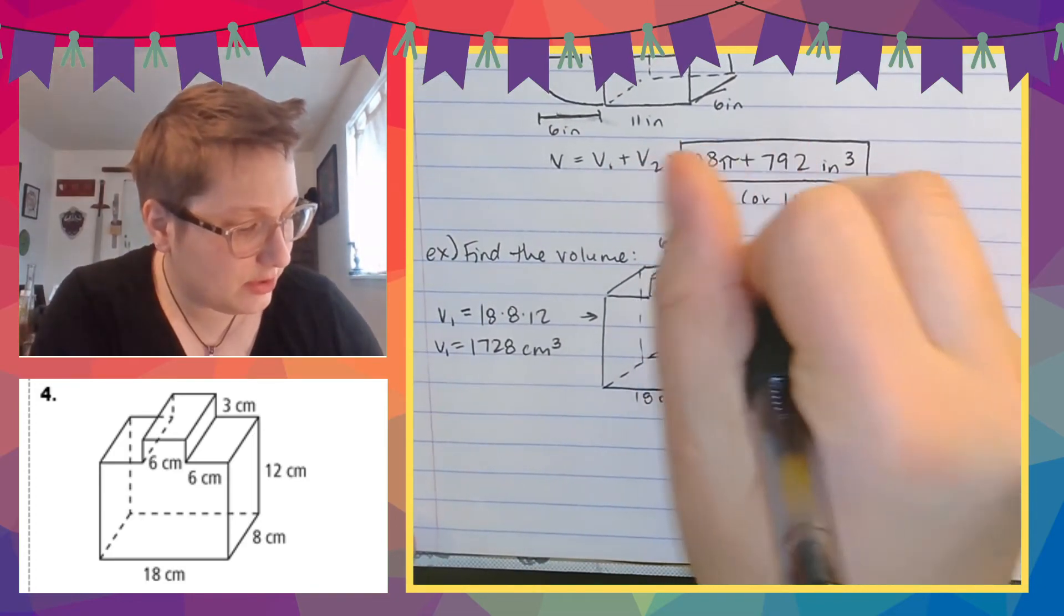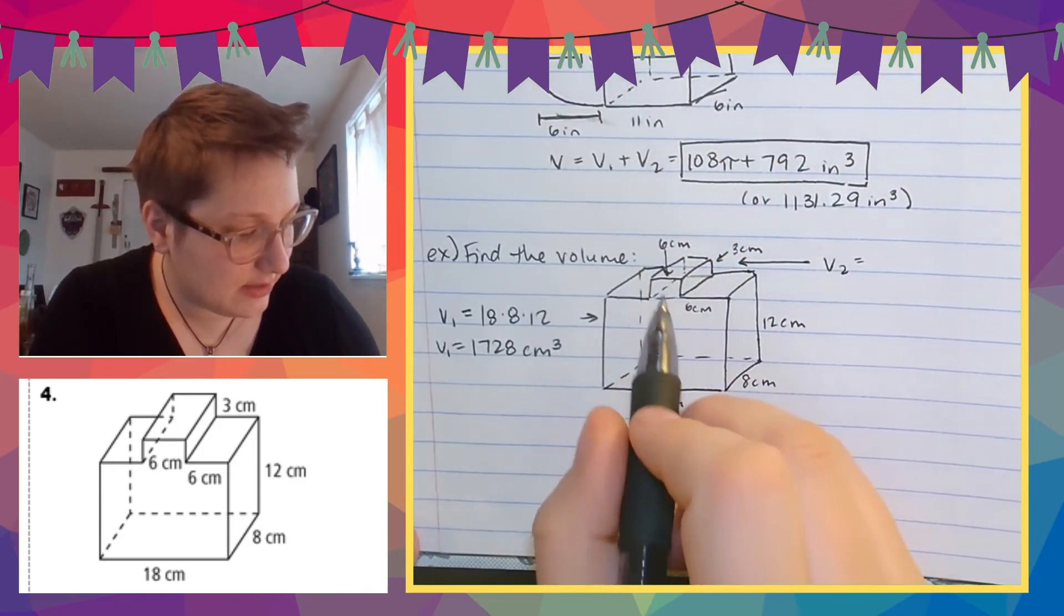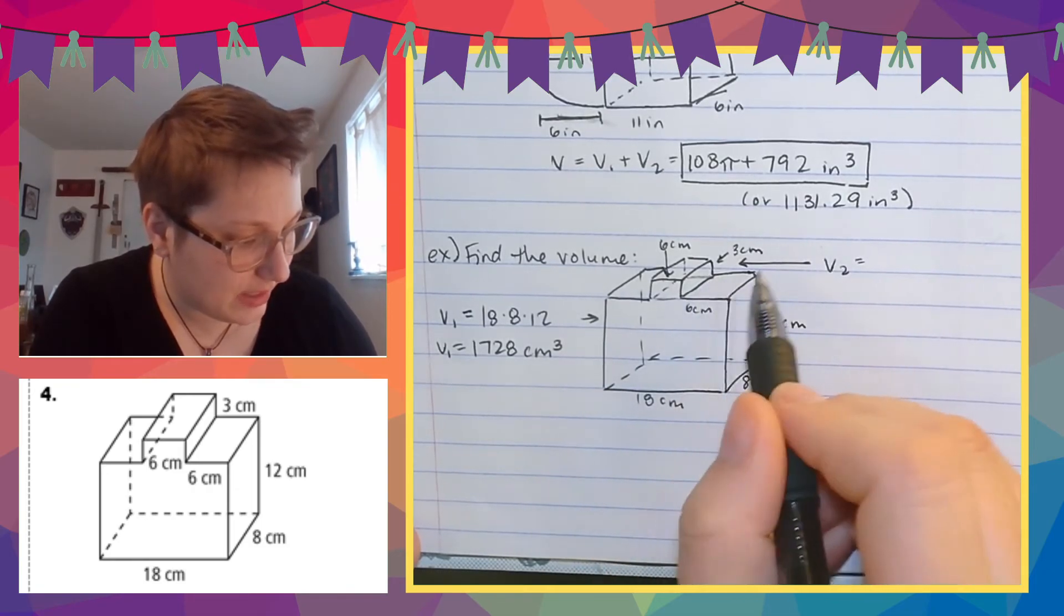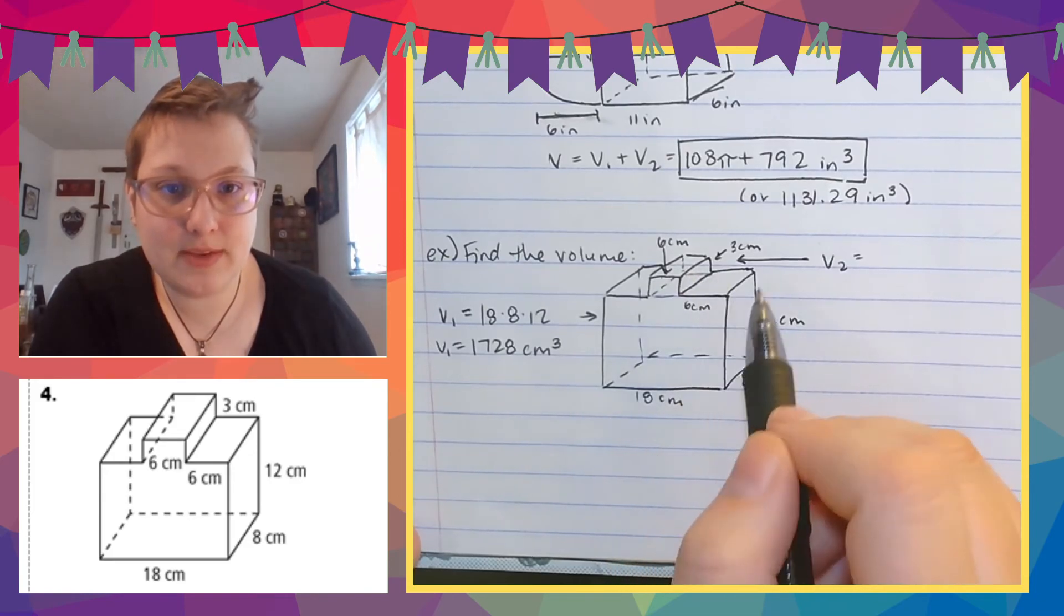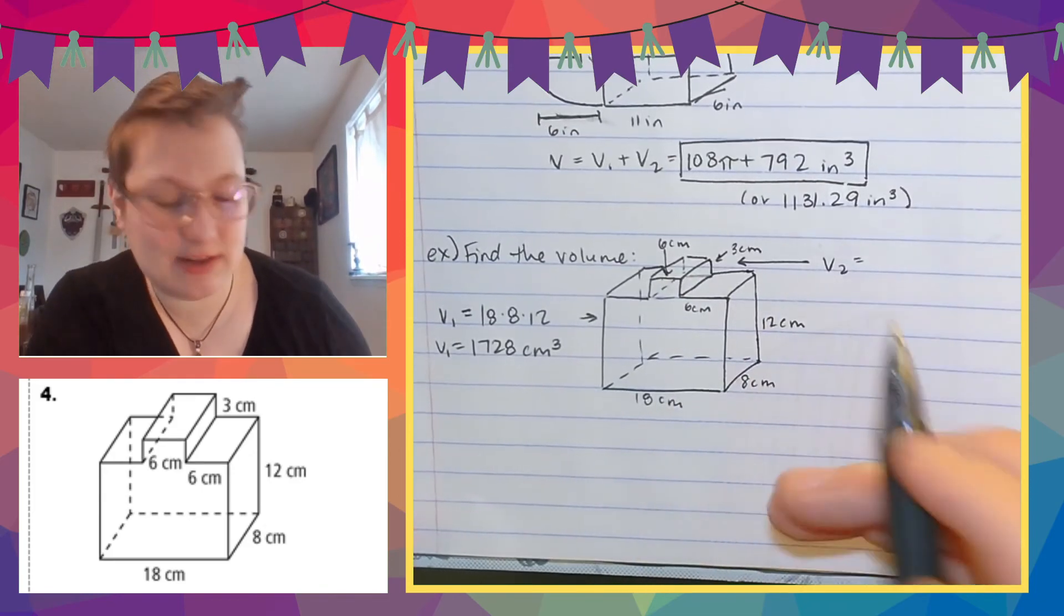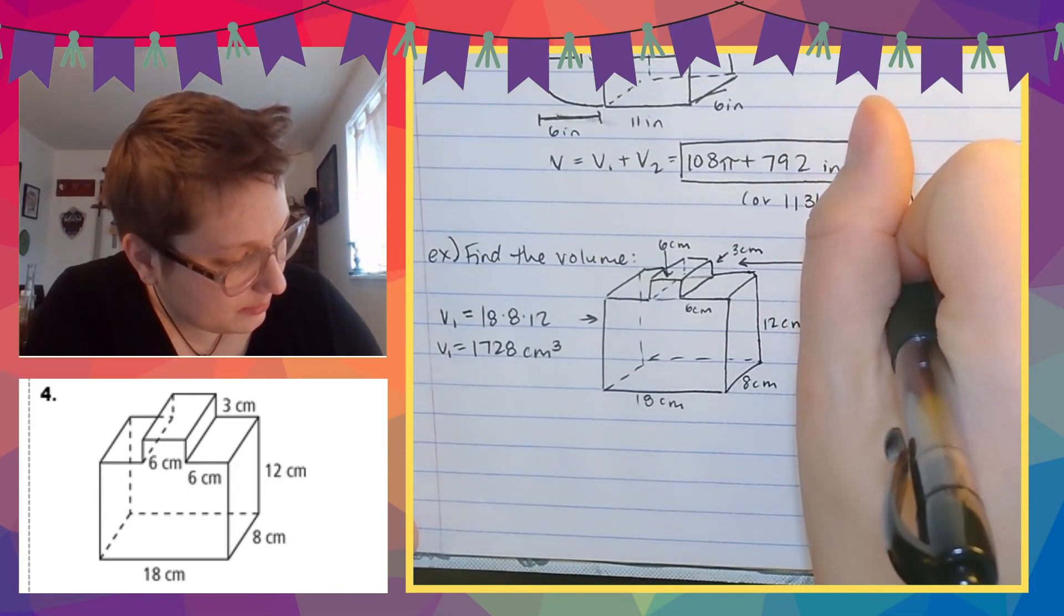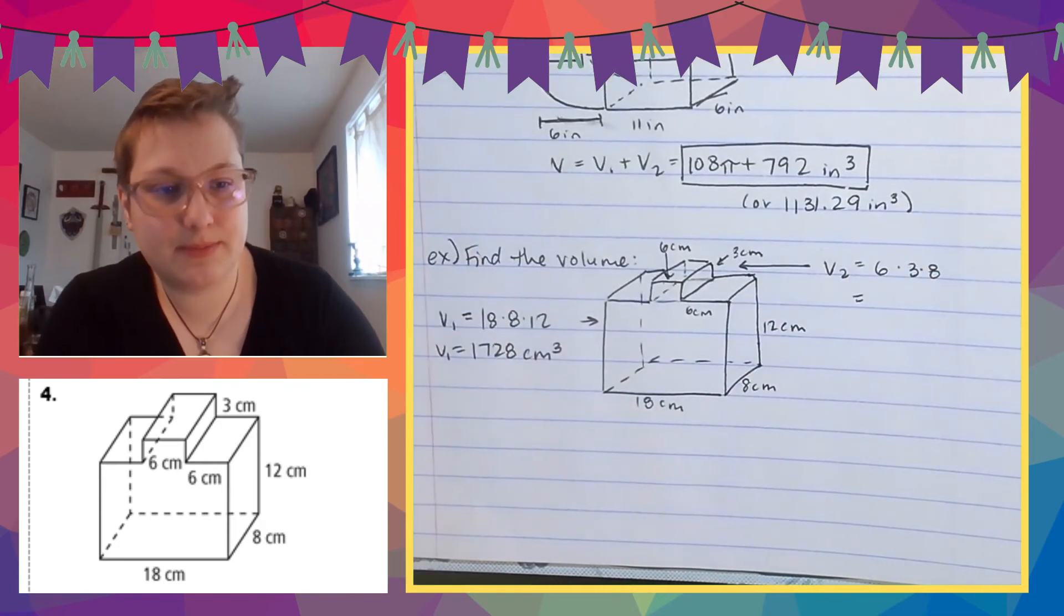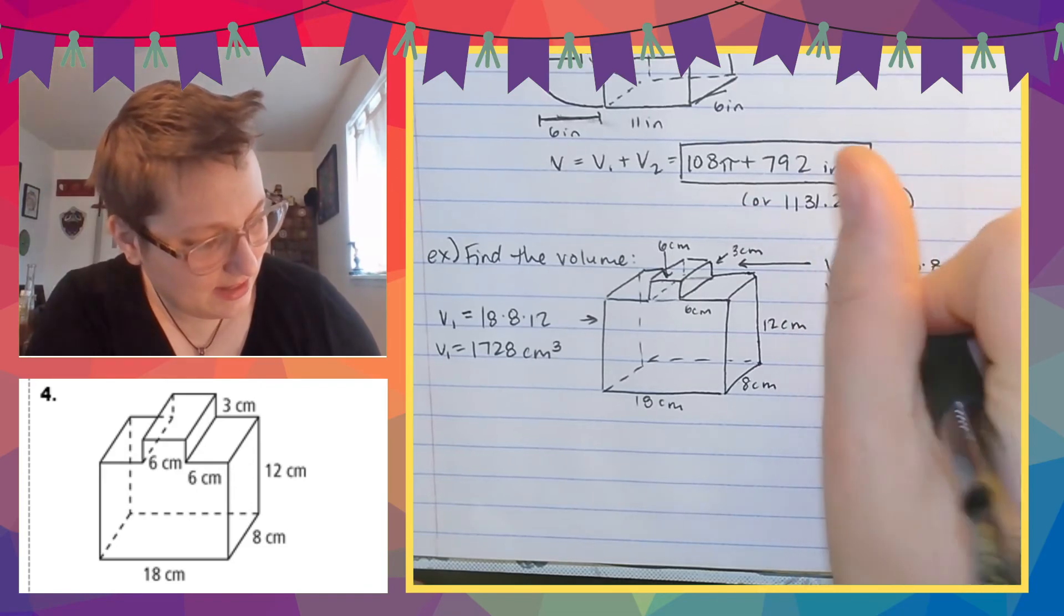And then the volume number two is going to be this little Mohawk part. So that's going to be, let's see here. So six by three by how wide is this? This is eight. So I knew it was eight because it's the same length all the way around. And I would just went until I found something. So it's going to be six by three by eight, which is a number. How did it turn into 12 squared? 144.